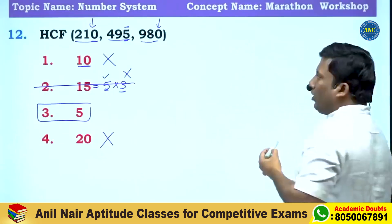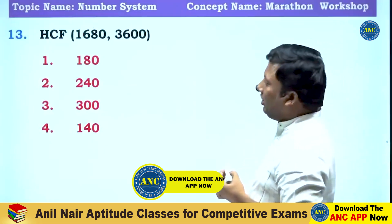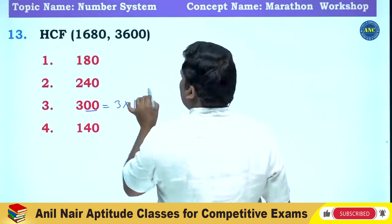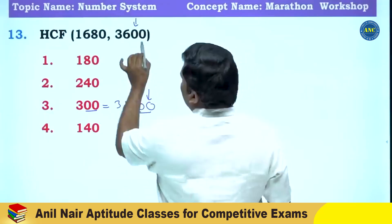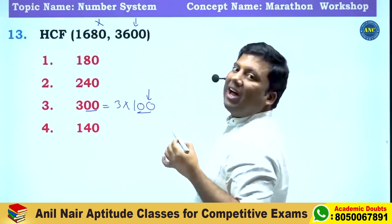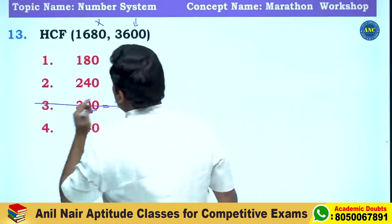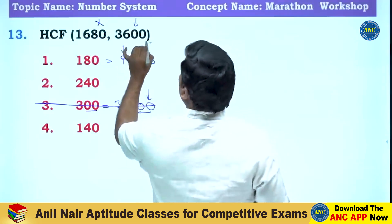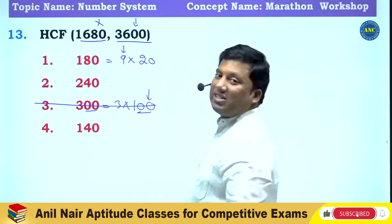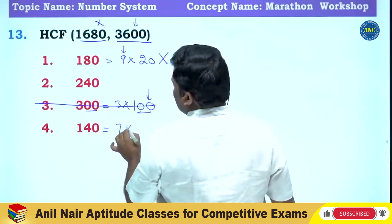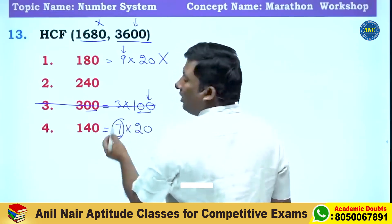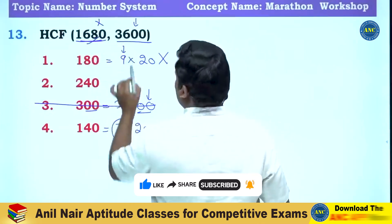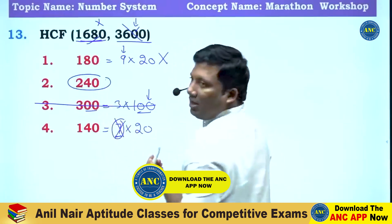Answer is 5. Next question: HCF of 1680 and 3600. Check option 300: 3600 = 3 × 100, divisible by 100, but 1680 — last two digits are 80, not divisible by 100, so 300 is out. Option 180 = 9 × 20: answer divisible by 9 means sum of digits divisible by 9. 1+6+8+0 = 15, not divisible by 9, so 180 is out. Option 140 = 7 × 20: check if both divisible by 7. 3600 ÷ 7 — 3600 is not divisible by 7, so 140 is out. The only remaining option is 240.